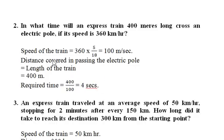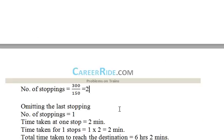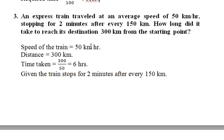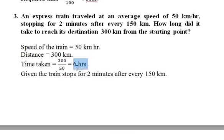Third question: An express train traveled at an average speed of 50 kilometers per hour, stopping for 2 minutes after every 150 kilometers. How long did it take to reach a destination 300 kilometers from the starting point? The speed is 50 km/h and the total distance is 300 kilometers. Dividing distance by speed gives 6 hours as the travel time to cover 300 kilometers.